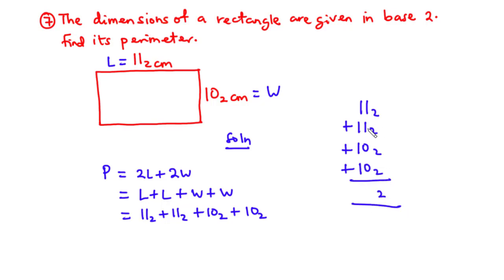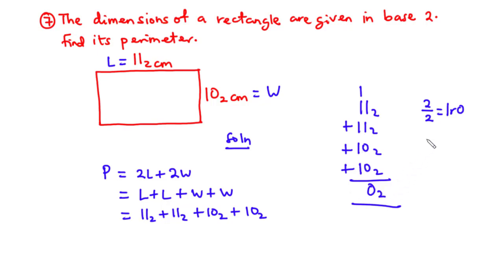Working it out: 1 plus 1 is 2, 2 plus 0 is 2, and 2 plus 0 is also 2. Since we are in base 2, we divide by 2: that is 1 remainder 0. We write the remainder 0 and carry the 1. Then 1 plus 1 is 2, 2 plus 1 is 3, 3 plus 1 is 4, and 4 plus 1 is 5. Since 5 is greater than 2, we divide 5 by 2: that gives 2 remainder 1. We write the remainder 1.